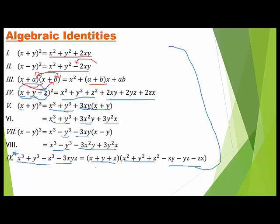Now, if x plus y plus z equals 0, then that factor becomes 0, and multiplying any polynomial by 0 gives 0. Therefore x³ plus y³ plus z³ equals 3xyz whenever x + y + z = 0. This is very important and is used to solve many calculation-based questions.